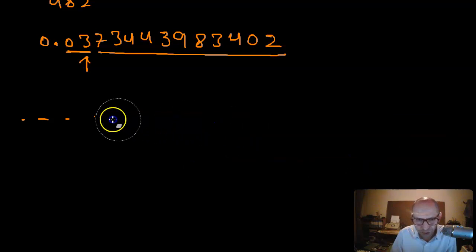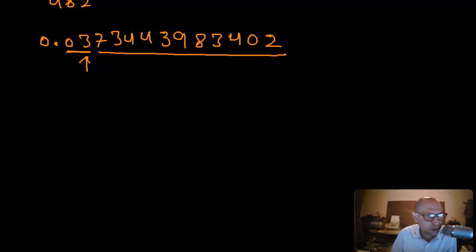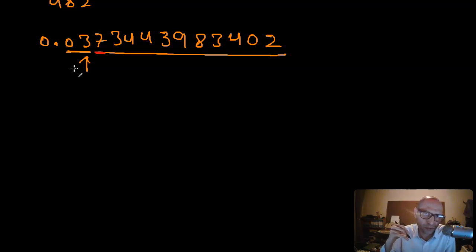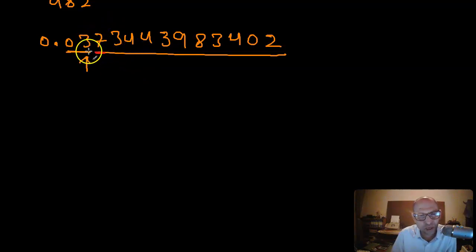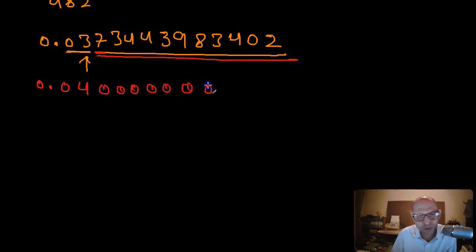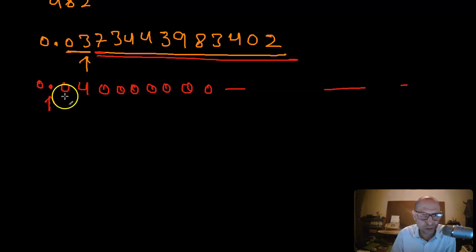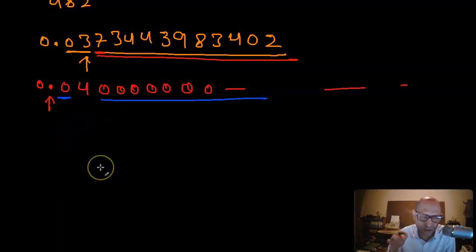To round to the one-hundredth place value, I look at the digit to the right. If it's greater than or equal to 5, I round up; if less than 5, I round down. The digit is 7, which is ≥ 5, so I round up: the 3 becomes a 4. The number becomes 0.04, and all remaining digits are replaced by zeros.